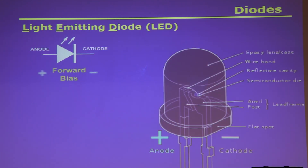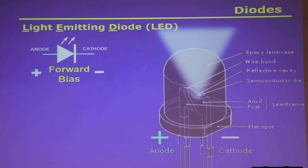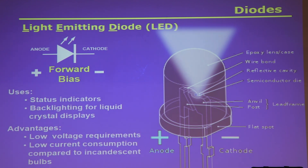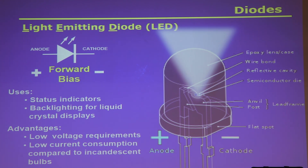The light-emitting diode — as long as you forward bias it, meaning you connect the cathode to negative and the anode to positive, you get light. They're used as status indicators and backlighting, and everything's going LED now because of low current consumption. The downside currently is that the market is being flooded by low-quality, low-cost LED lighting devices with noisy power supplies — they just wipe out your radios.